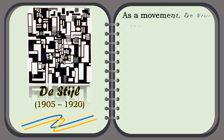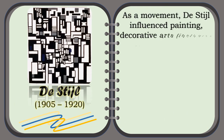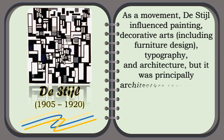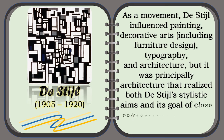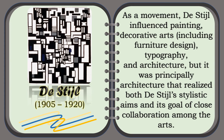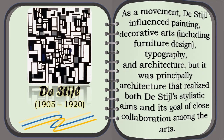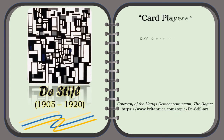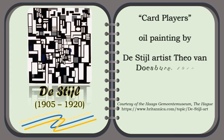As a movement, De Stijl influenced painting, decorative arts including furniture design, typography, and architecture — but it was principally architecture that realized both De Stijl's stylistic aims and its goal of close collaboration among the arts. For example, the card players, oil painting by De Stijl artist Theo van Doesburg, in 1917, in the collection of the Gemeentemuseum, The Hague.